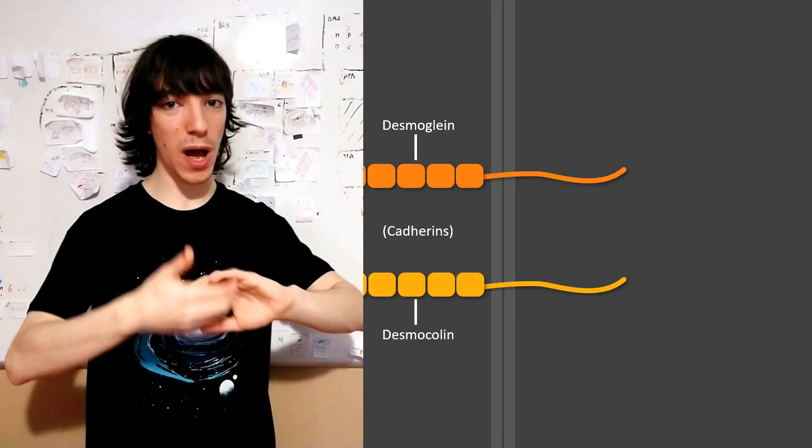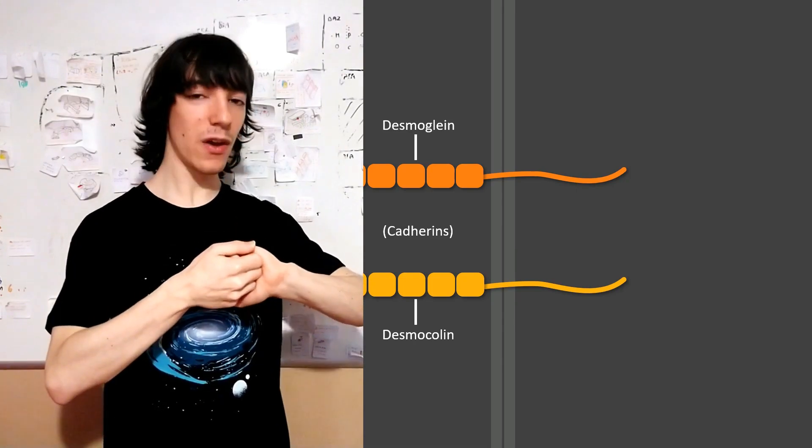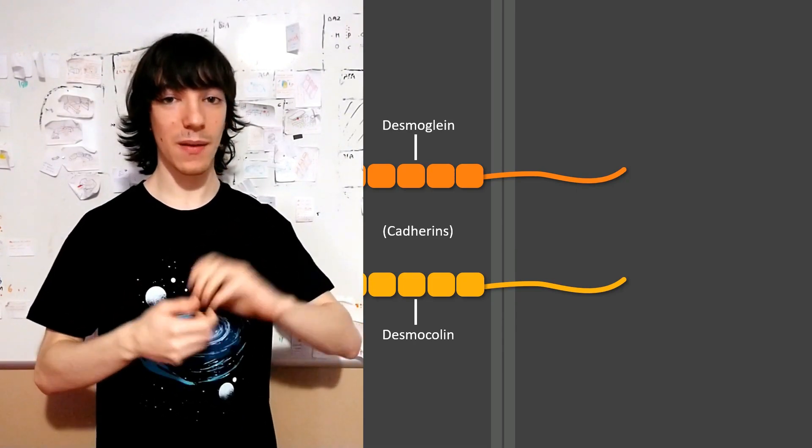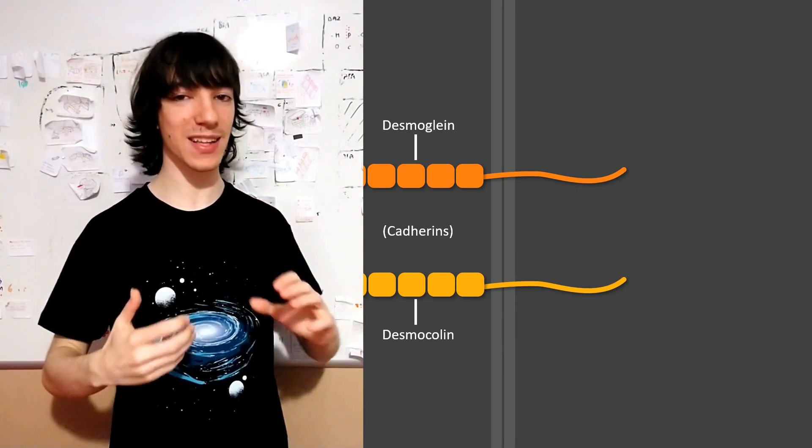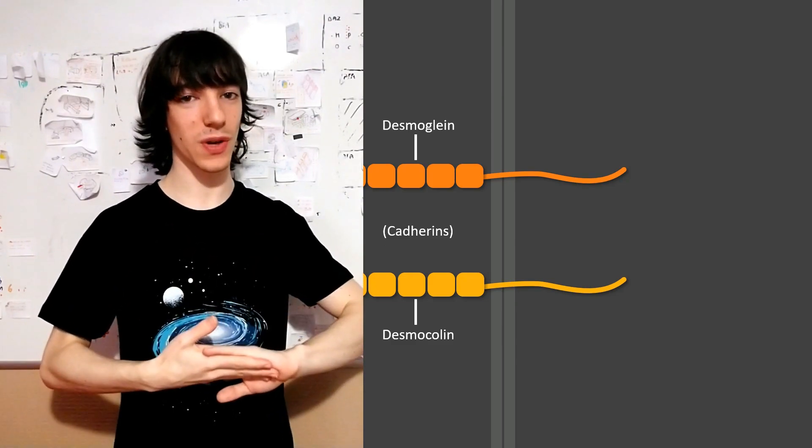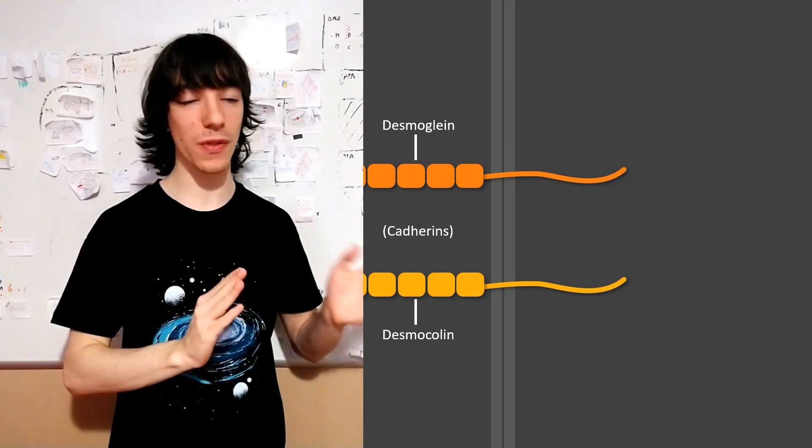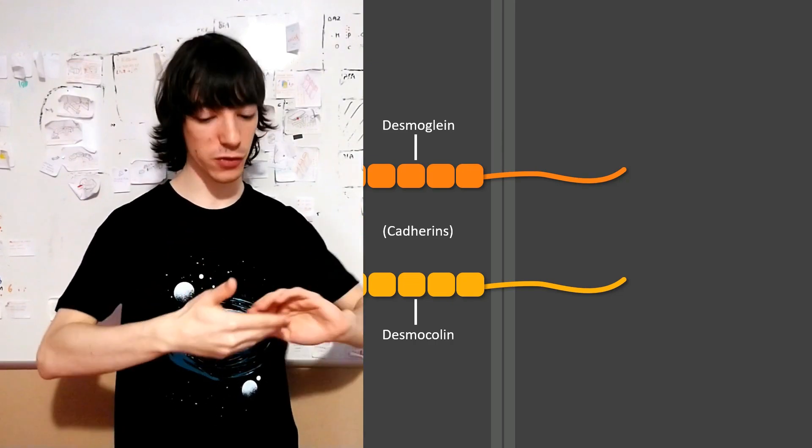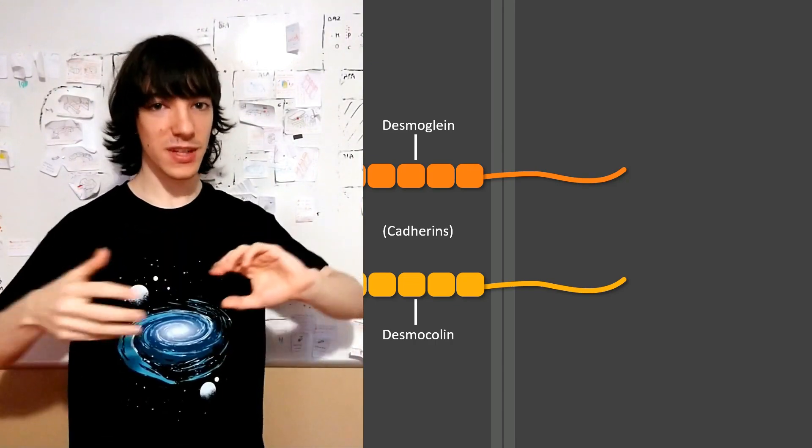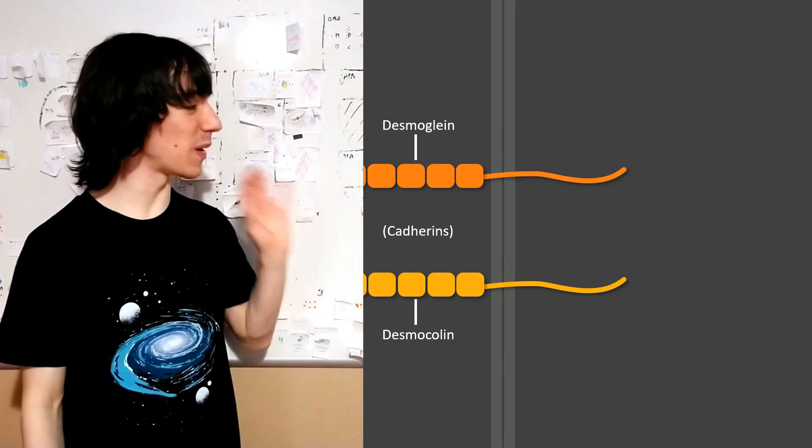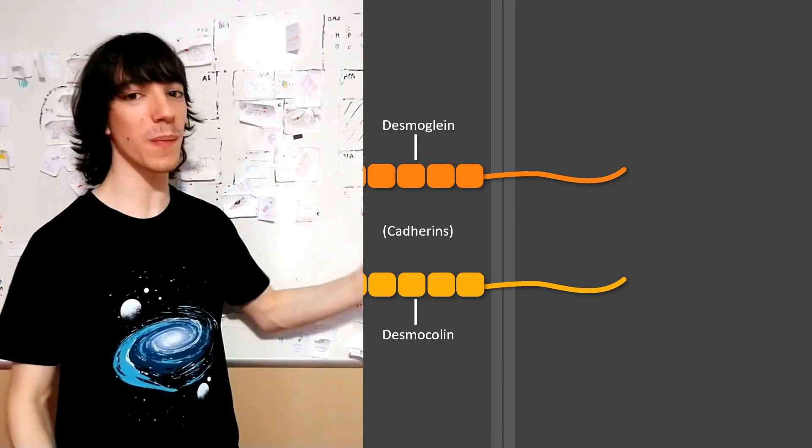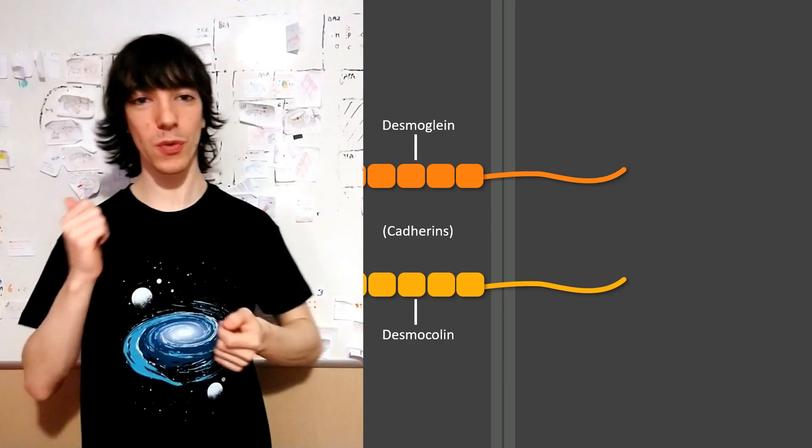Remember, cadherins grab other cadherins, they make homotypical bindings with them, with identical cadherins, and that is enough to bring cells close together. Not as close as with claudins or occludins, but it's enough to prevent them from separating. Especially when you have hundreds or thousands of them in the same area as you do in desmosomes.